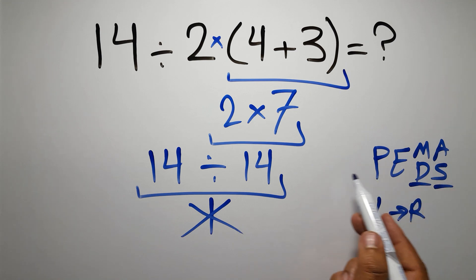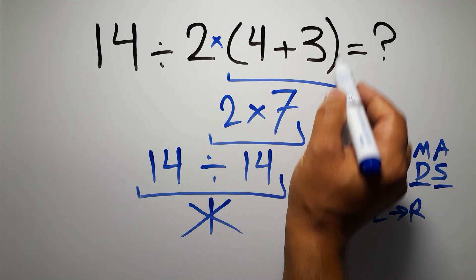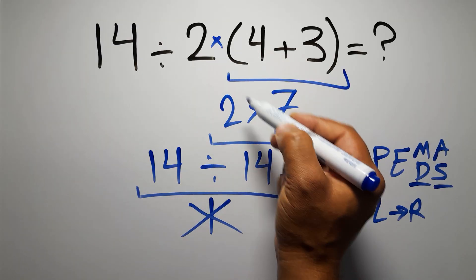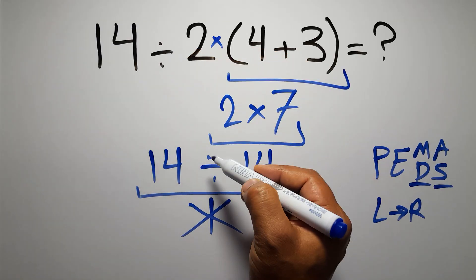So according to the PEMDAS, first we have to do this parentheses, then this division, and finally this multiplication. If we do this multiplication before this division, it is wrong.